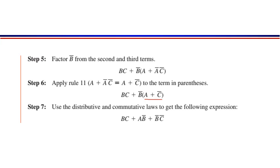Step number five mein B' common kar dena hai second aur third term se, toh A + A'C' likha aaya. Rule number eleven apply karenge: A + A'C' = A + C'. Toh BC + B'(A + C') expression likhi aayegi. Ab B' ko A + C' ke saath multiply karne par final expression aayegi: BC + AB' + B'C'. Is tarah complex expression simplify ho gayi.